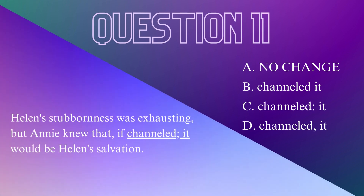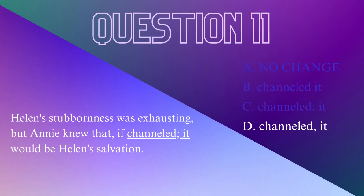Question 11. 'Helen's stubbornness was exhausting, but Annie knew that, if channeled; it would be Helen's salvation.' In a previous lesson I went over how to properly use semicolons. For a semicolon to be correct, there must be two independent clauses on either side. While the clause after the semicolon is independent, the one before it is not. A is incorrect; B is incorrect because that would be a run-on; C is incorrect because we use a comma, not a colon. D is the answer.